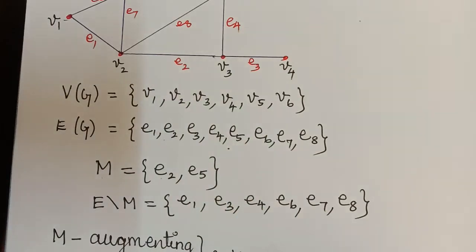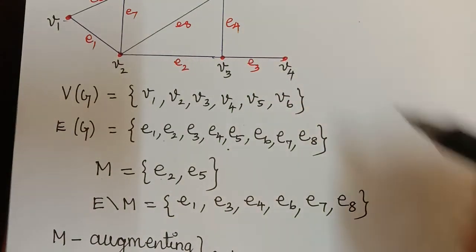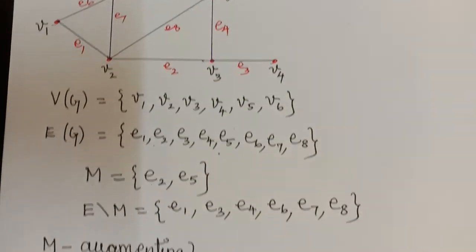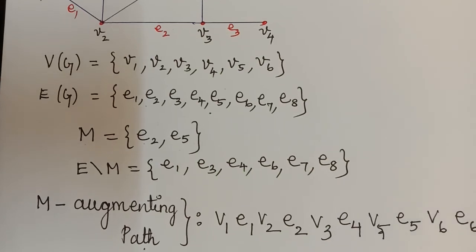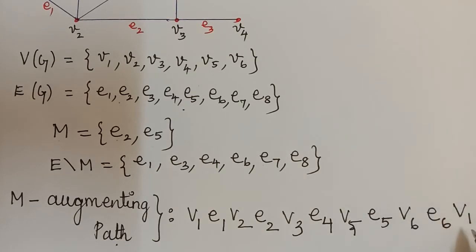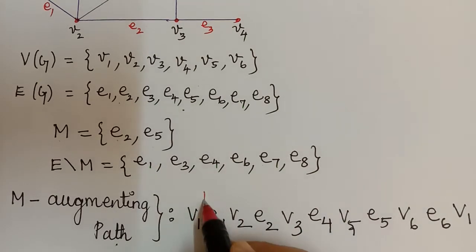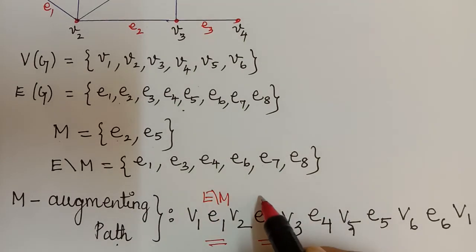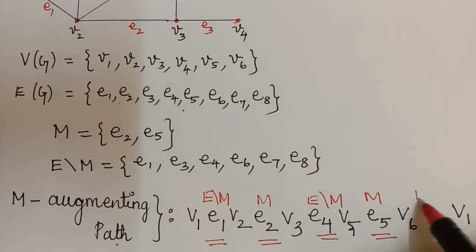So we start with V1, then edge E1, then V2, then E2, then V3. After that we have edge E4, then vertex V5, then edge E5, then vertex V6. We write this path such that the origin and the terminus are M unsaturated. The edges alternate: E1 is from E restricted to M, E2 is from M, E4 is from E restricted to M, E5 is from M, and E6 is from E restricted to M.